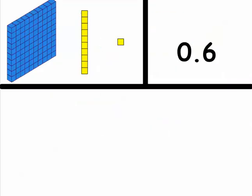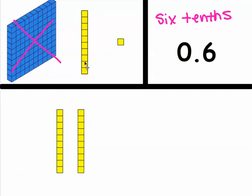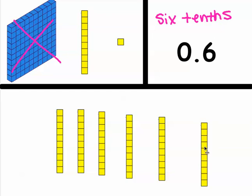When we're using our base 10 blocks to represent decimals, remember our hundreds block is equal to one whole. Here we have 0.6, which is 6 tenths, because that 6 is in the tenths place value. Whatever number is directly to the right of the decimal point is in the tenths place value. To represent 0.6, we don't have any whole numbers so we won't use any hundreds blocks, but we have 6 in the tenths value, so we're going to use 6 tens blocks — that's 6 tenths.